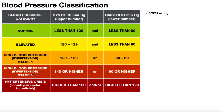Stage two hypertension has a systolic blood pressure greater than 140 — technically 140 to 179 — and the diastolic blood pressure is at least 90, technically 90 to 119. Those cutoff values exist because we also have a hypertensive crisis, where the systolic blood pressure is greater than 180 or the diastolic blood pressure is greater than 120 millimeters of mercury.